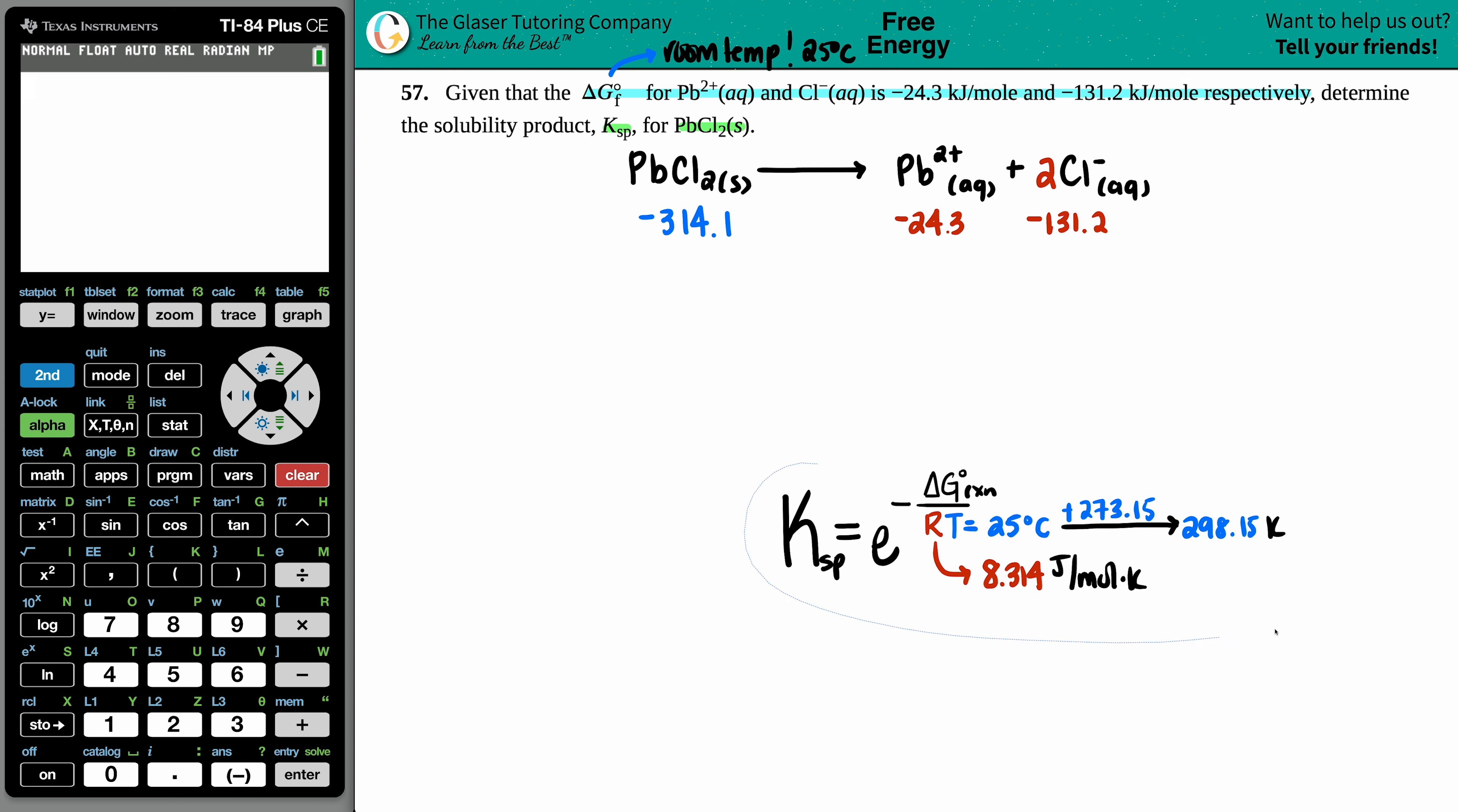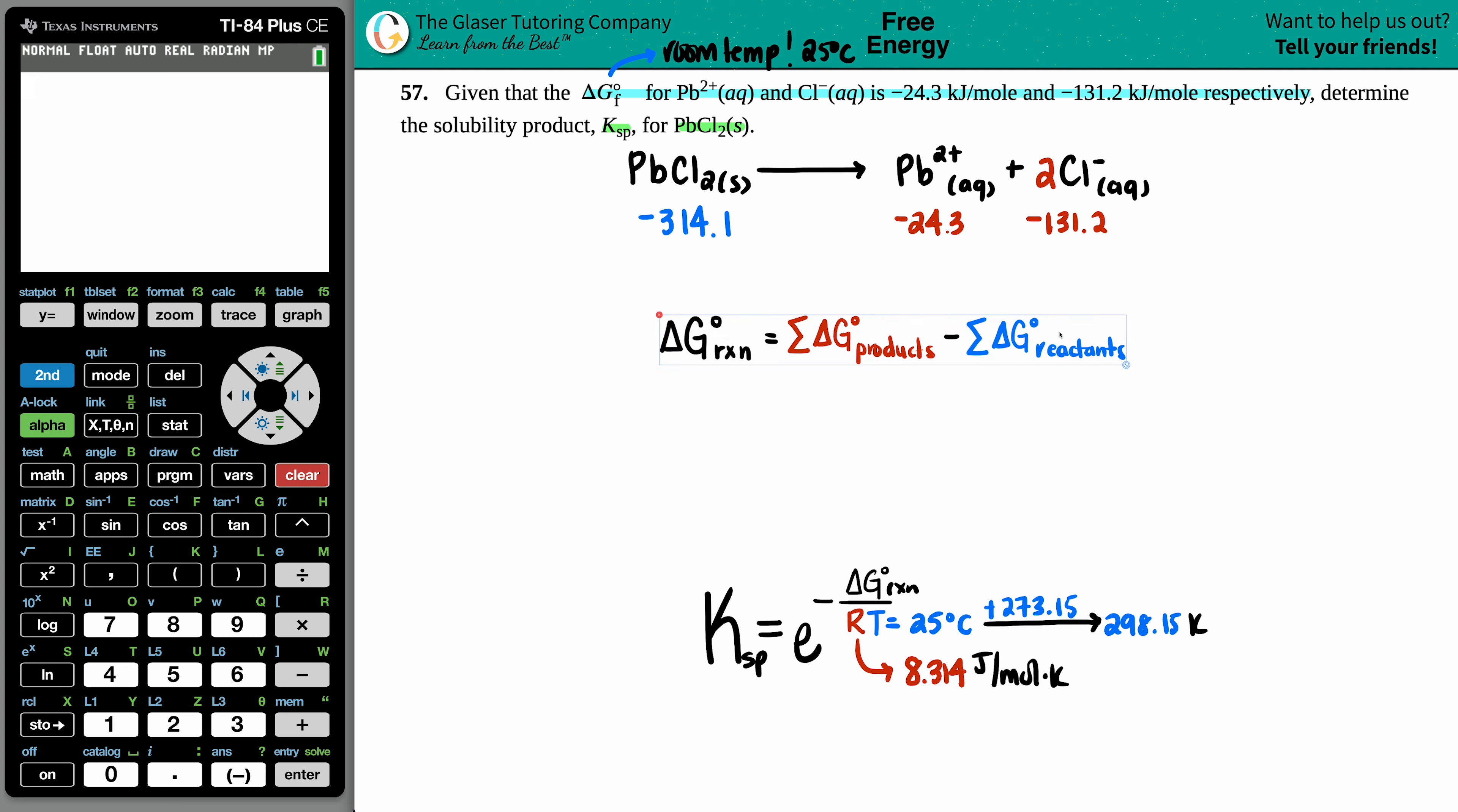How do I get a delta G for the whole reaction from individual delta Gs? ΔG_rxn equals the sum of products minus sum of reactants, taking into account how many you have. I had one PbCl₂ times one, one Pb²⁺ times one, but two Cls so that gets times two. Sum up the sides: Pb²⁺ plus Cl⁻, so I add the two products together. Only one reactant, so that's -314.1 total.